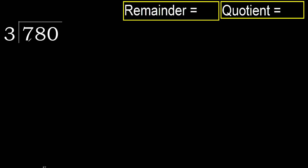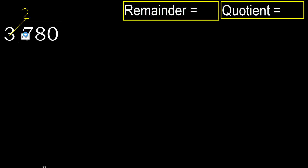780 divided by 3. 7 is not less, therefore start with 7. 3 multiplied by which number is nearest to 7, but not greater? 3 multiplied by 3 is 9 — 9 is greater. 3 multiplied by 2 is 6 — 6 is not greater. 7 minus 6 is 1.